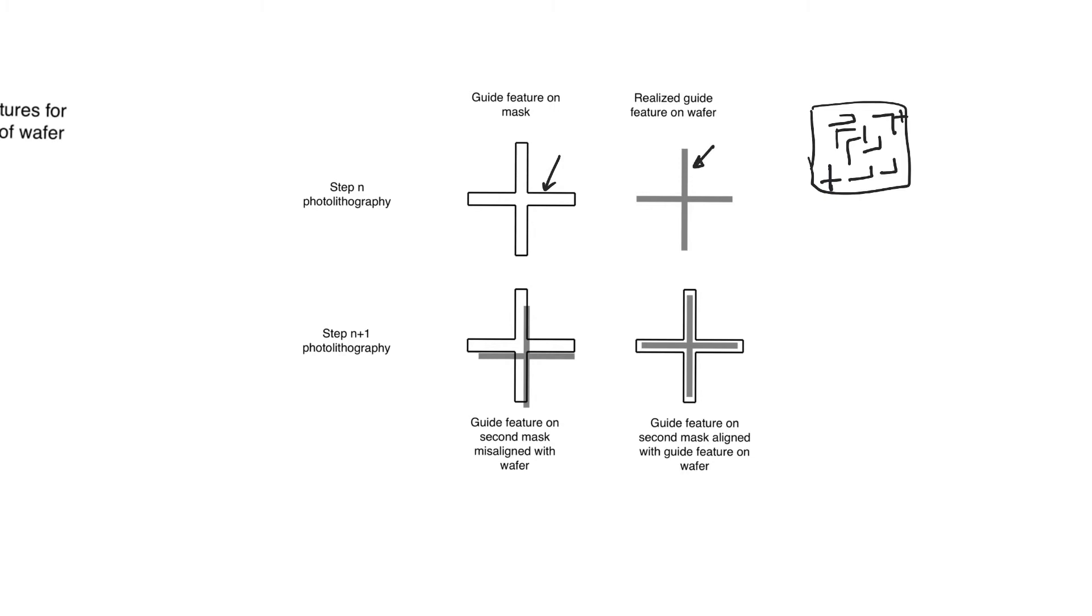So this dummy drawing in the mask is going to create a dummy feature. Let's imagine that this is a polysilicon feature that is created on the chip in a specific location.